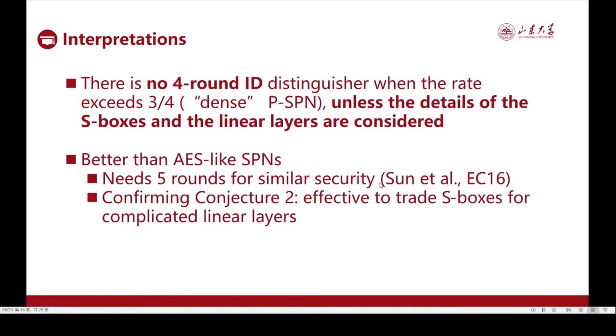Our result should be interpreted as follows. There is no four-round impossible differential distinguisher when the rate exceeds 3 quarters, unless the details of the components in the block ciphers are considered. This positive result is better than the analog on AES-like SPNs, because the latter needs 5 rounds, and because the latter uses a linear layer that is much weaker than MDS. So the result means it indeed makes sense to trade stronger linear layers with S-boxes, and the structural security may be improved.